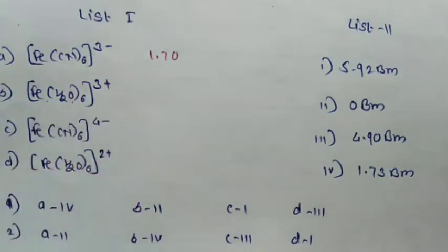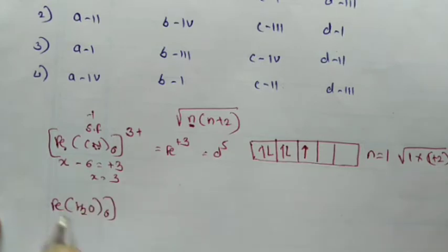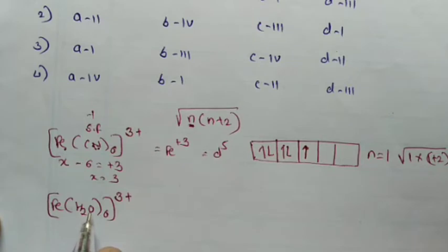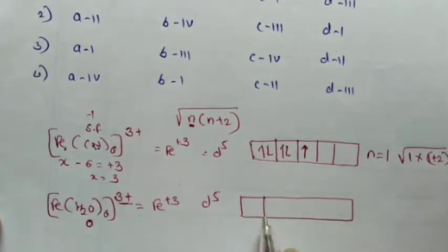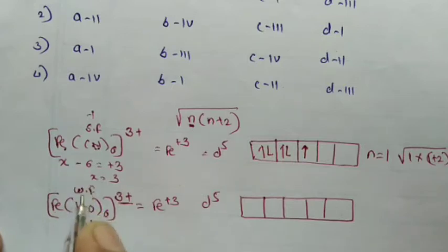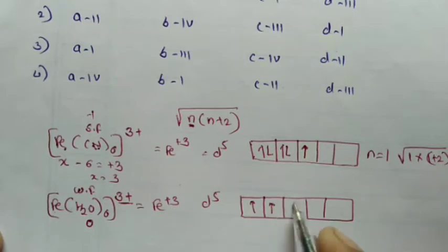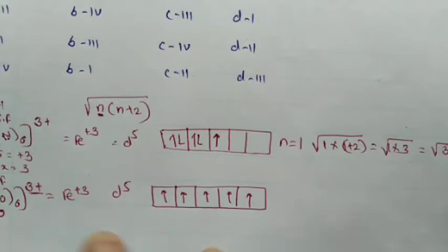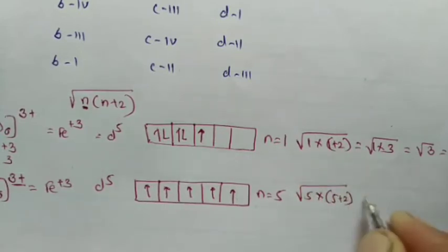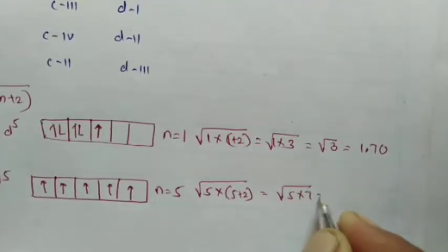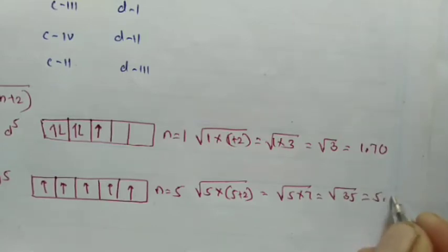Second complex: Fe(H₂O)₆³⁺. Water is neutral so its charge is 0, giving oxidation state of iron as plus 3, meaning 5 electrons are present in the d orbit. Water is a weak field ligand, so the 5 electrons fill up singly: 1, 2, 3, 4, 5. Number of unpaired electrons N equals 5. Calculating: square root of 5×7 = square root of 35 ≈ 5.90 BM.